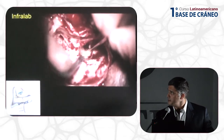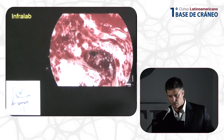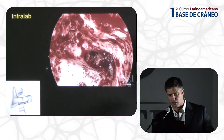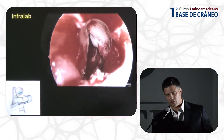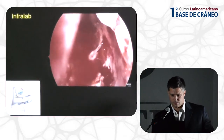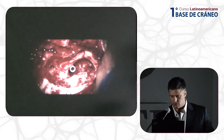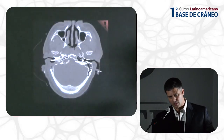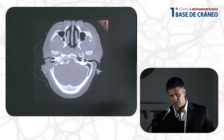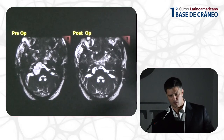The mastoidectomy was done and we opened into the cholesterol granuloma. You can see the vertical segment of the facial nerve in the posterior canal wall. A scope was inserted into the lesion for a look afterwards, and you can see the pulsations of the posterior dura. We placed a frontal sinus stent — used in sinus surgery — to keep the opening patent. Post-operative CT shows the stent at the petrous apex, and post-operative MRI shows resolution of the cholesterol granuloma. The abducens palsy cleared and the facial paralysis was persistent at most recent follow-up.